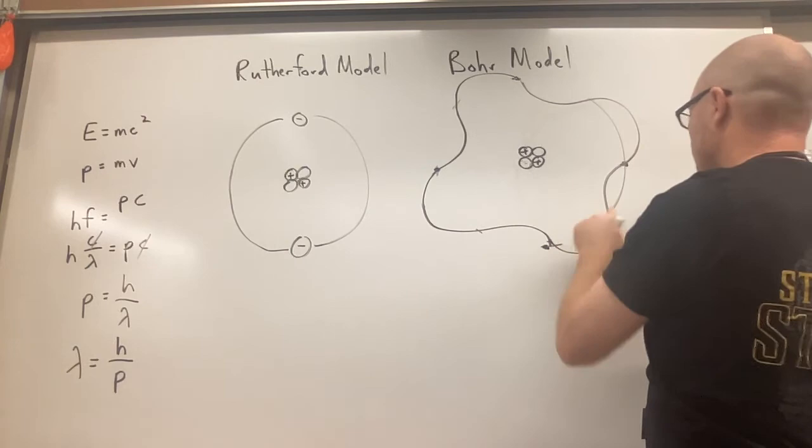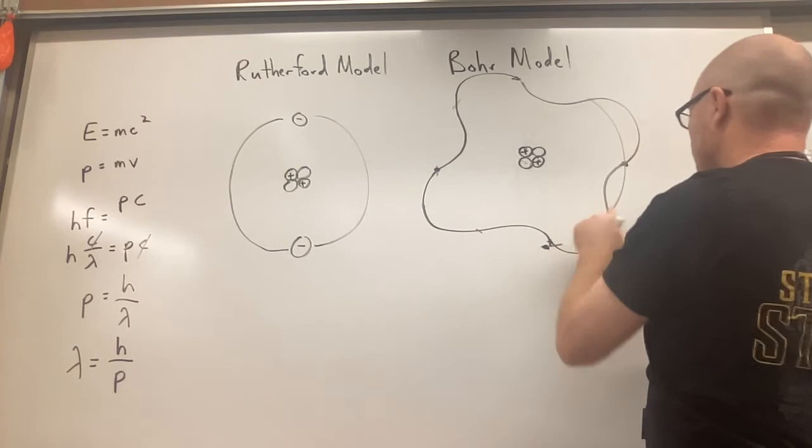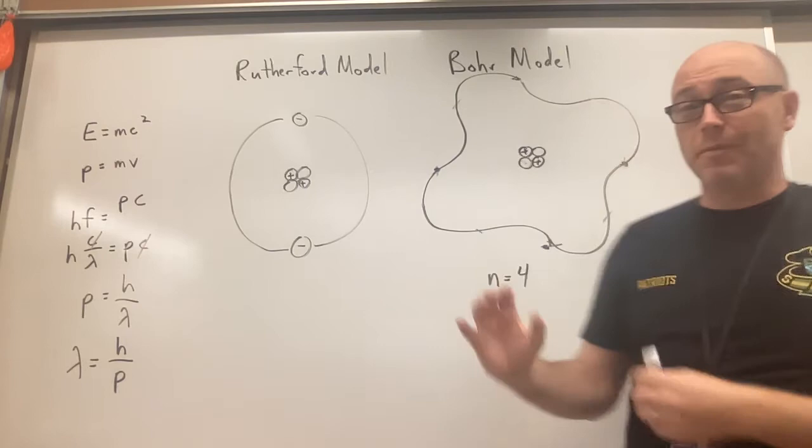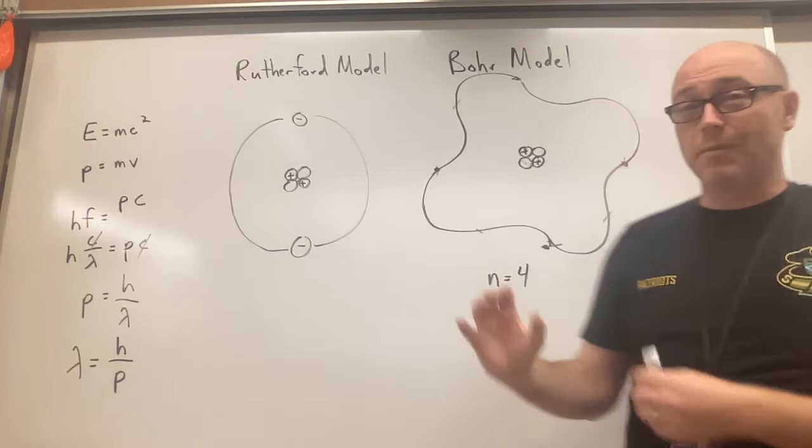This is kind of what the thing would look like, so my electron is going to be four like this, so this would be n equals four. So each energy level is going to be one of those distinct waves that's going to fit around. I hope that makes sense. I'm going to have you watch the next video which kind of shows you a simulation with this, and hopefully it'll make more sense. Alright, bye kids!